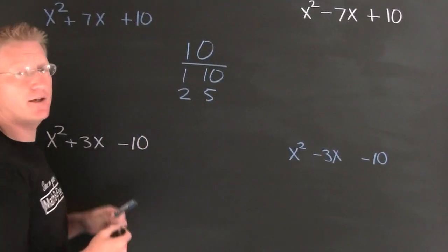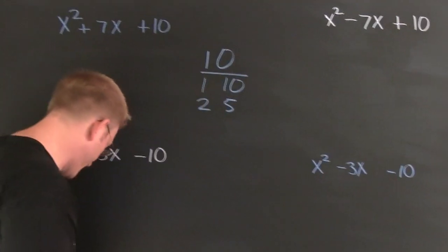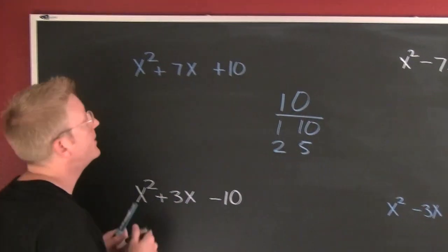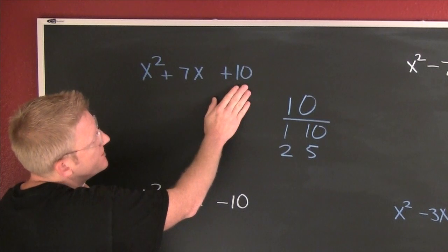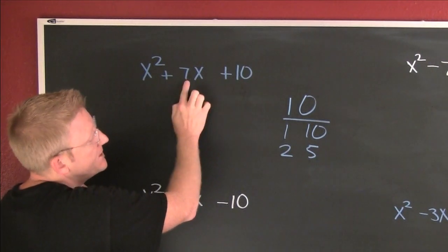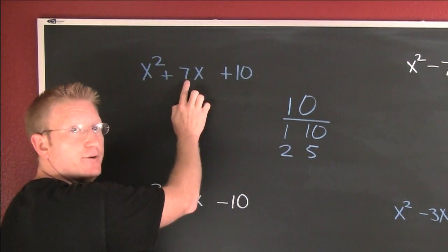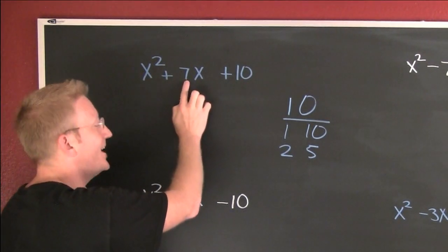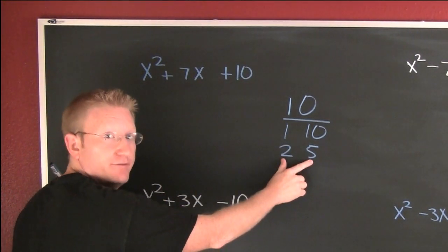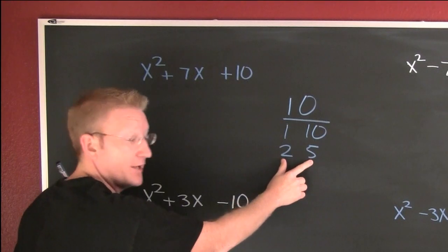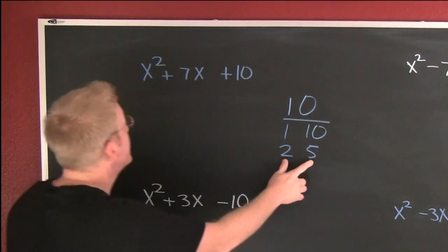Let's take a look at our first example. I'm looking for the factors of 10 that add to be 7. Are there any? Yes — 2 and 5.